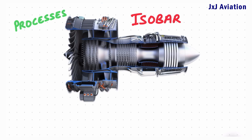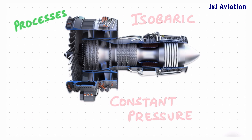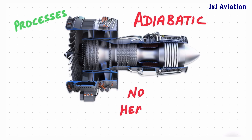Isobaric process. This is a thermodynamic process that occurs at a constant pressure. Adiabatic process. This is a process where there is no heat exchange between the system and its surroundings.